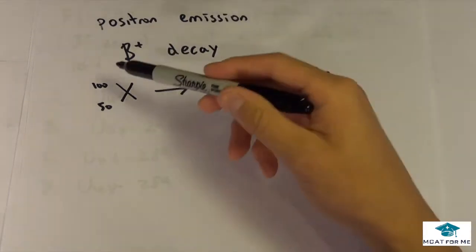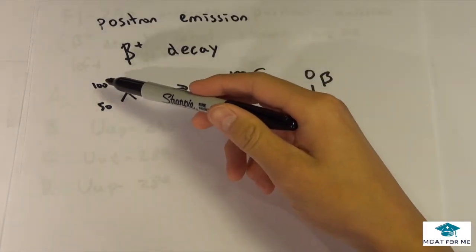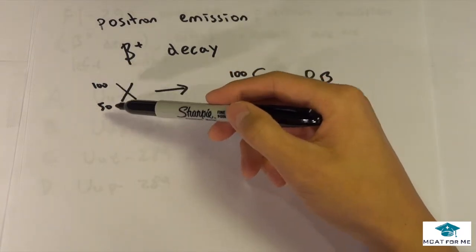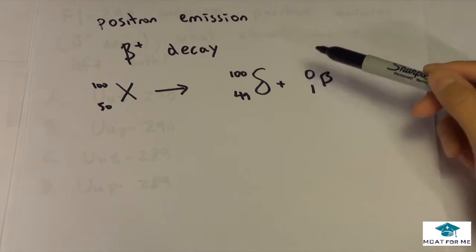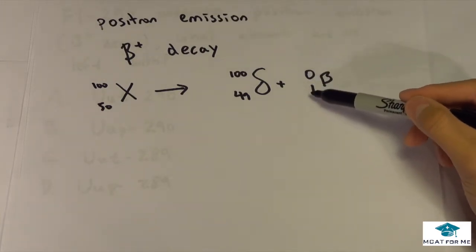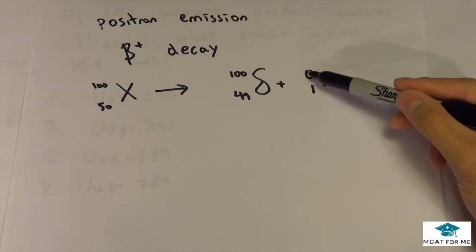So X is just some arbitrary element and we said that it has a mass number of 100 and a proton number of 50, and it will release this positron which is 0 for the weight but it does have a positive 1 charge, which is this proton right here. So 0, 1, and let's just call this beta.